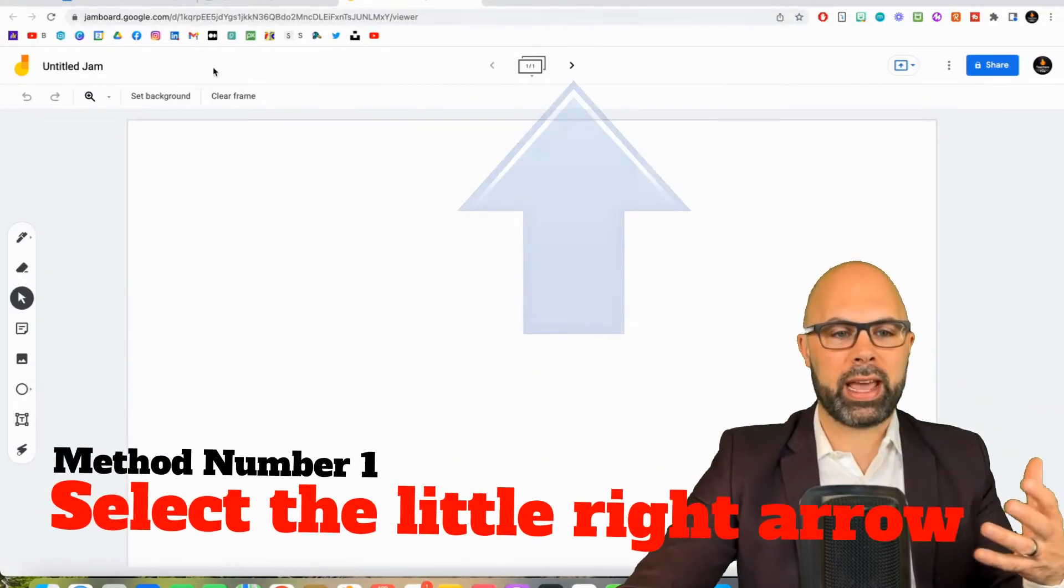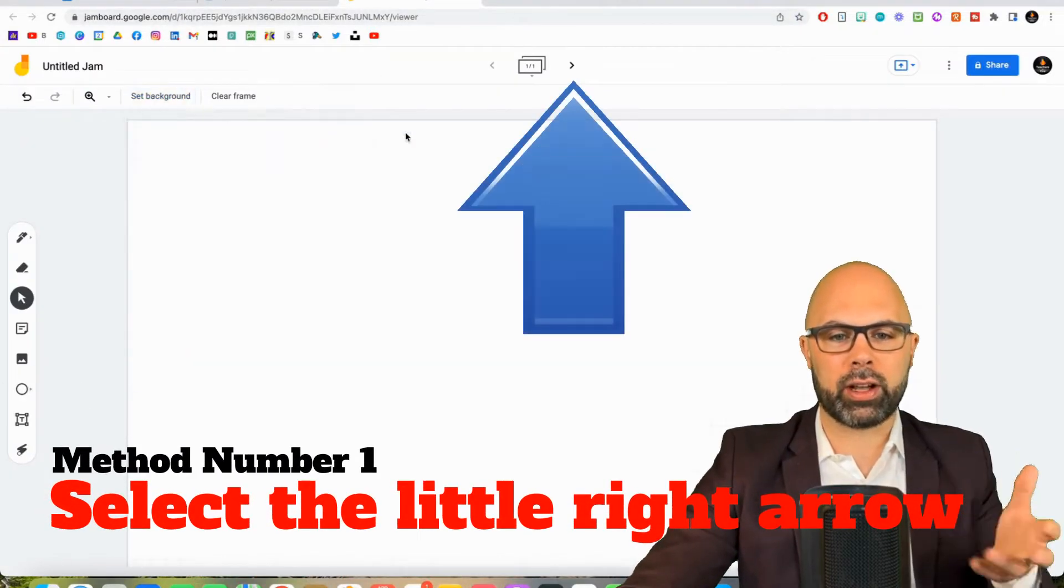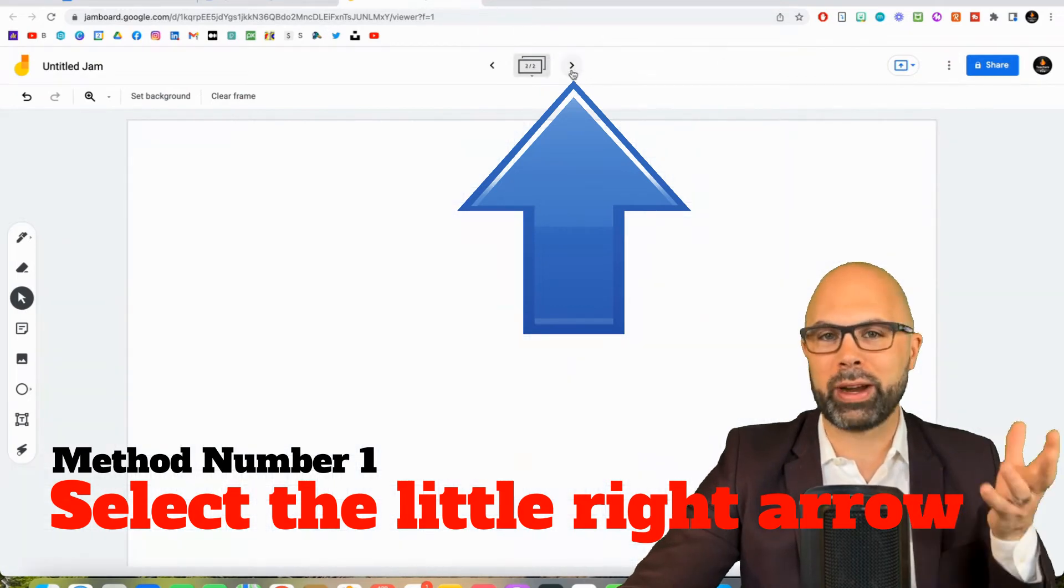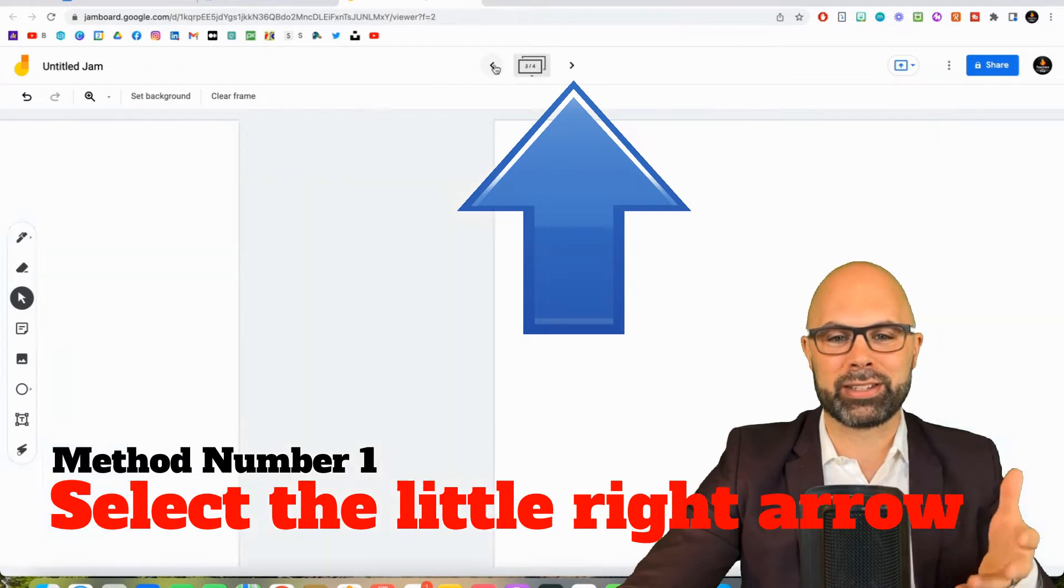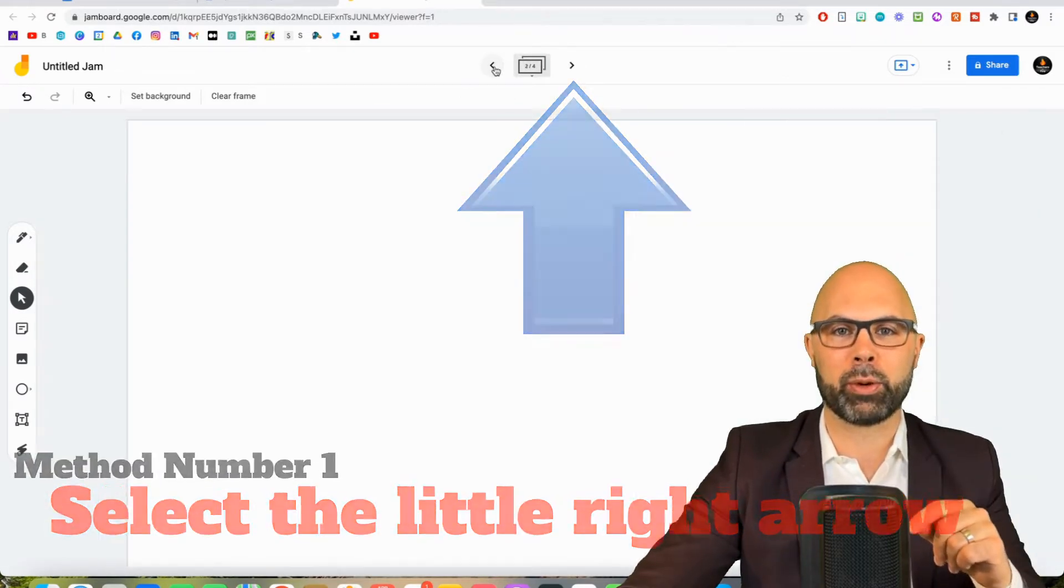Now the very first way to add a new slide is super easy. All you need to do is hit the right arrow up here and you're good. It'll make as many slides as you want. So that's all you need to do. That's method number one.